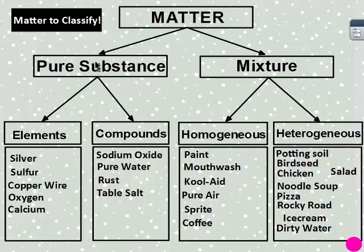Homogeneous, uniform throughout. Paint. Although whenever you open up the can, you do have to stir it, but before you used it, it should be homogeneous. Mouthwash. Kool-Aid. Air is not a compound. A lot of people missed that one. But air is made up of oxygen, nitrogen, carbon dioxide, and many other gases that are just in a mixture. They're not chemically bonded together. Sprite and coffee are all homogeneous.